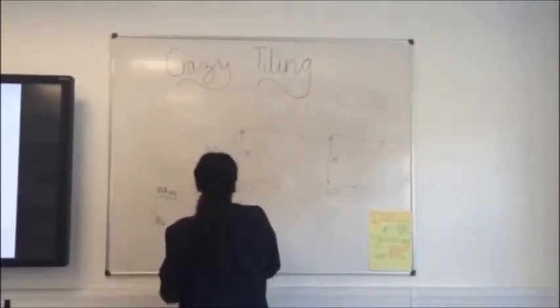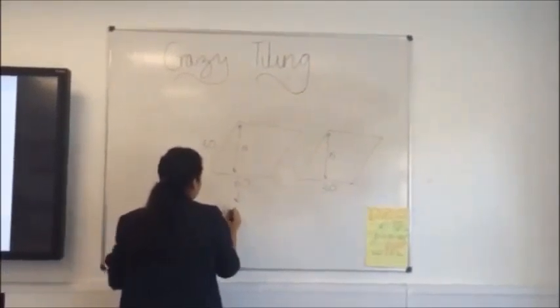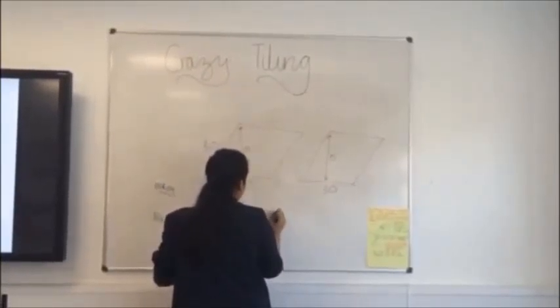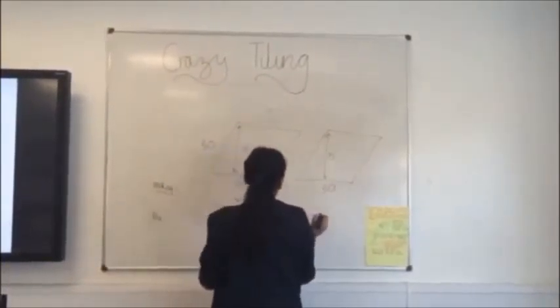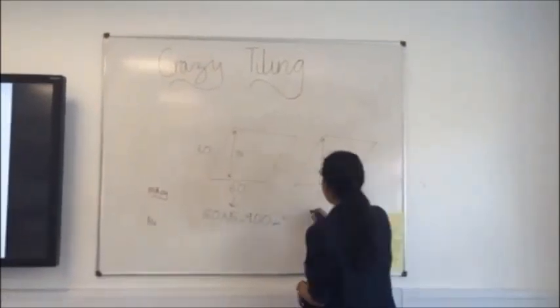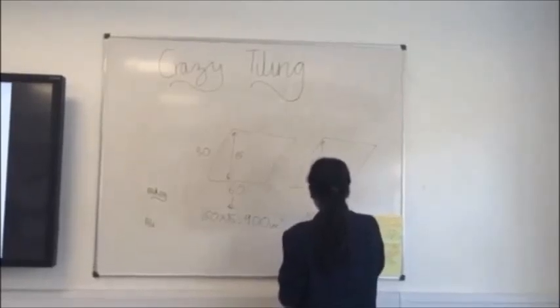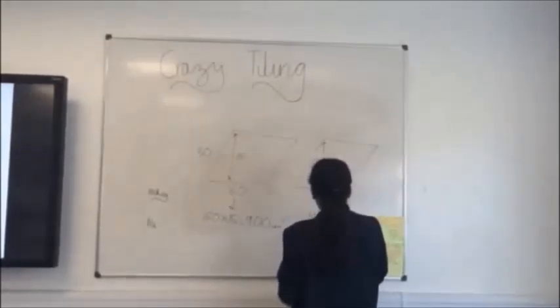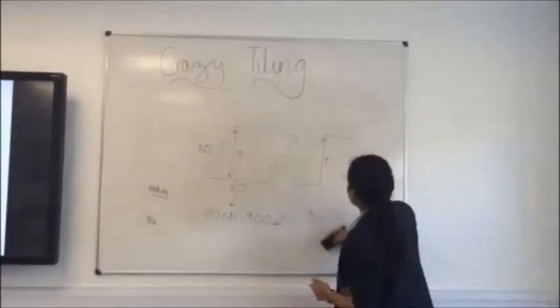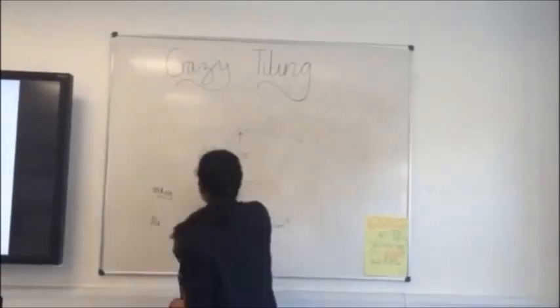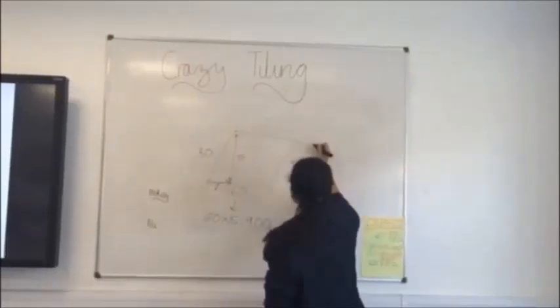So, Ali's area would be 60 times 15, which is 900 centimeters squared. And Mikey's area would be 30 times 15, which equals 450 centimeters squared. For some reason, we thought that we should find the size of X here, which is Pythagoras.